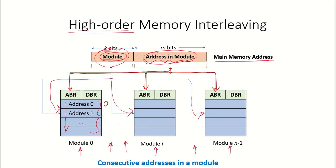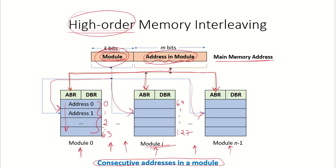In high order memory interleaving, the addresses are stored in consecutive locations within a particular module — address 0, 1, 2 and so on. If there are 64 addresses per module, one module holds addresses 0 to 63, the next holds 64 to 127, and so on. The high order bits select the memory bank or module, and consecutive addresses reside within the same module.